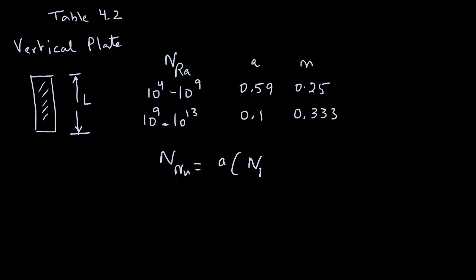Nusselt number equals A in parentheses, Grashof number times Prandtl number, which is the Rayleigh number, raised to power M. In the textbook, you will see other shapes as well as orientations of different objects and appropriate relationships between the Rayleigh number and Nusselt number so that one can calculate an appropriate Nusselt number. And from Nusselt number, we can find out the convective heat transfer coefficient since you know that Nusselt number equals H dc over K.